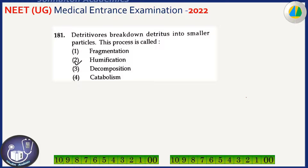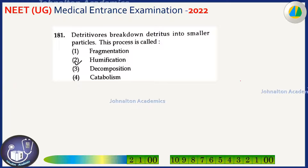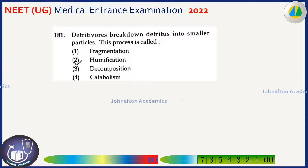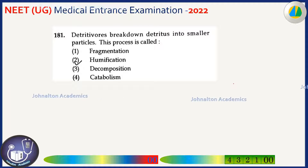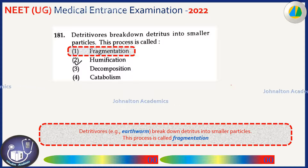Detritivores break down detritus into smaller particles. This is the second question on the same topic — they are asking two questions from the same topic. The answer is fragmentation. Basically, decomposition occurs in many steps: fragmentation, leaching, humification, and catabolism. Catabolism is before humification. This is fragmentation by earthworms, for example. The correct answer is number one.